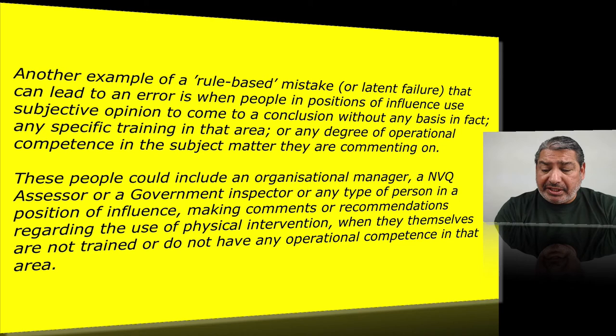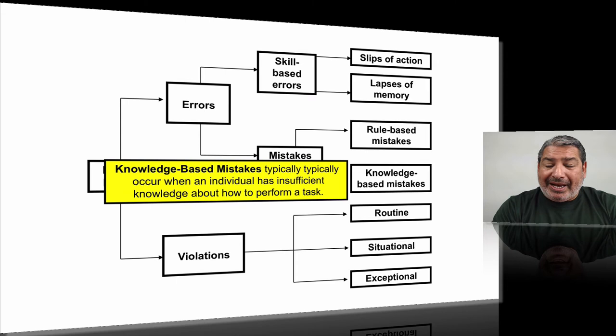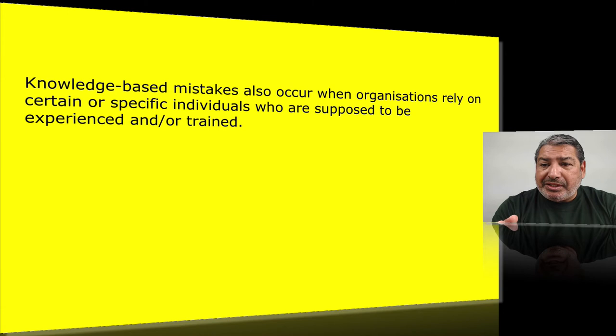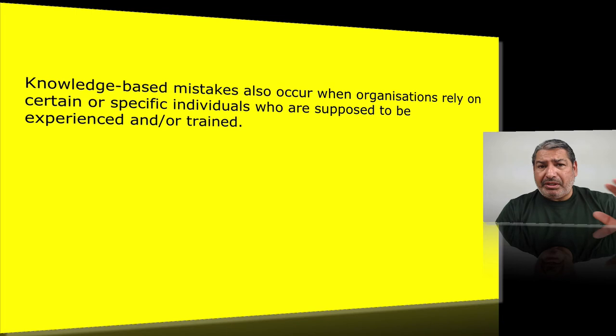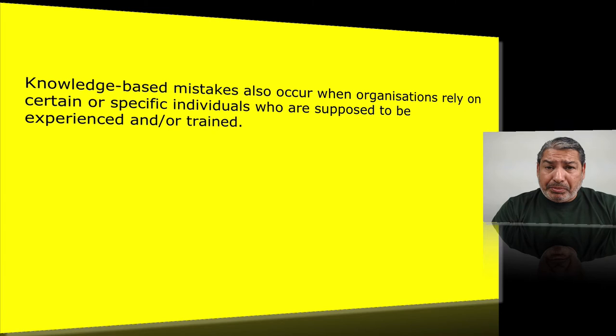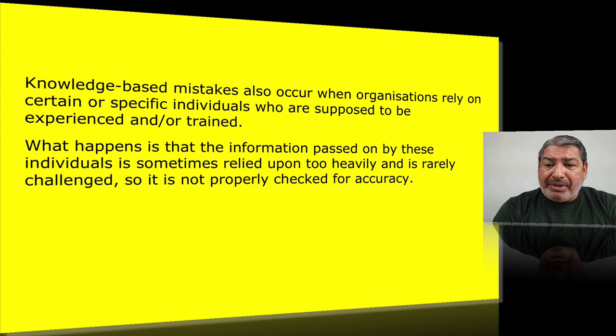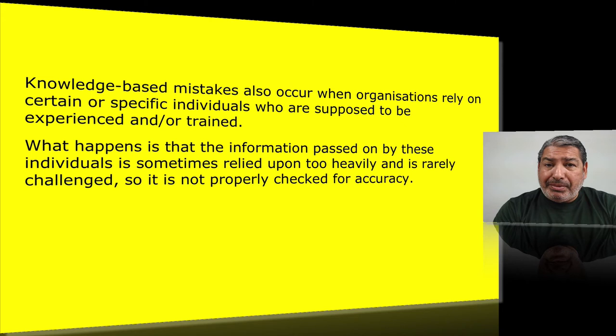The next type of mistake is a knowledge-based mistake. These typically occur when an individual has insufficient knowledge about how to perform a task. Organisations primarily rely on certain individuals who are supposed to be experienced or trained — Joe, Mary, Susan, Harry — they've been doing it a long time, so they're left to their own devices without further qualification or CPD. The information passed on by these individuals is sometimes relied upon too heavily and is rarely challenged for accuracy. When you do challenge these people, they can be quite abrupt and forceful, making you look stupid for asking the question because they don't know the answer.